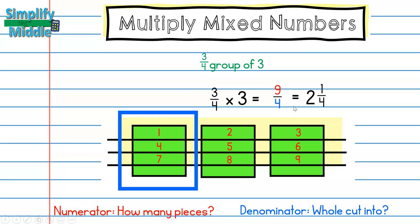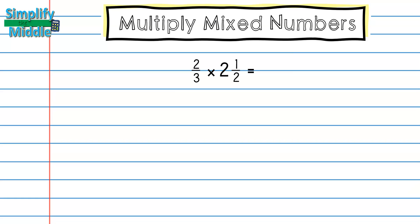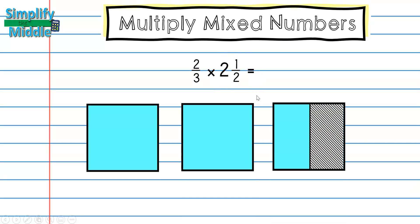Let's apply this to our mixed numbers. I have two-thirds times two and a half. I'll first start by drawing two and a half — this represents a piece that is missing; sometimes this is also left blank.